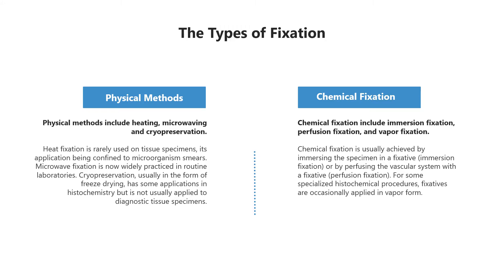Fixation of tissues can be achieved by physical or chemical means. Physical methods include heating, microwaving, and cryopreservation. Heat fixation is rarely used on tissue specimens, its application being confined to microorganism smears. Microwave fixation, which can be considered a form of heat fixation, is now widely practiced in routine laboratories. Cryopreservation, usually in the form of freeze-drying, has some applications in histochemistry but is not usually applied to diagnostic tissue specimens.